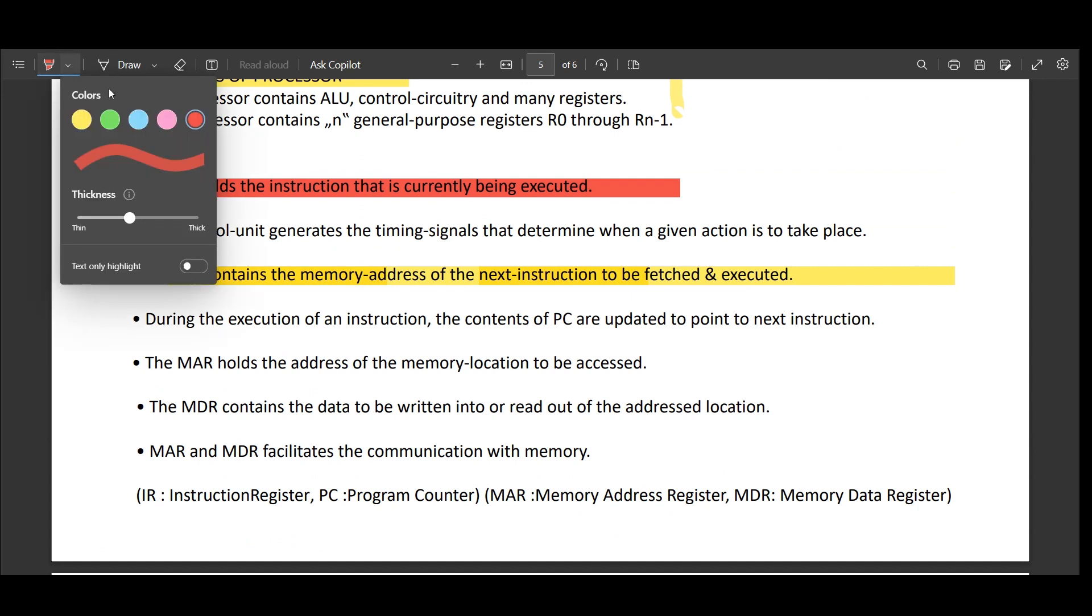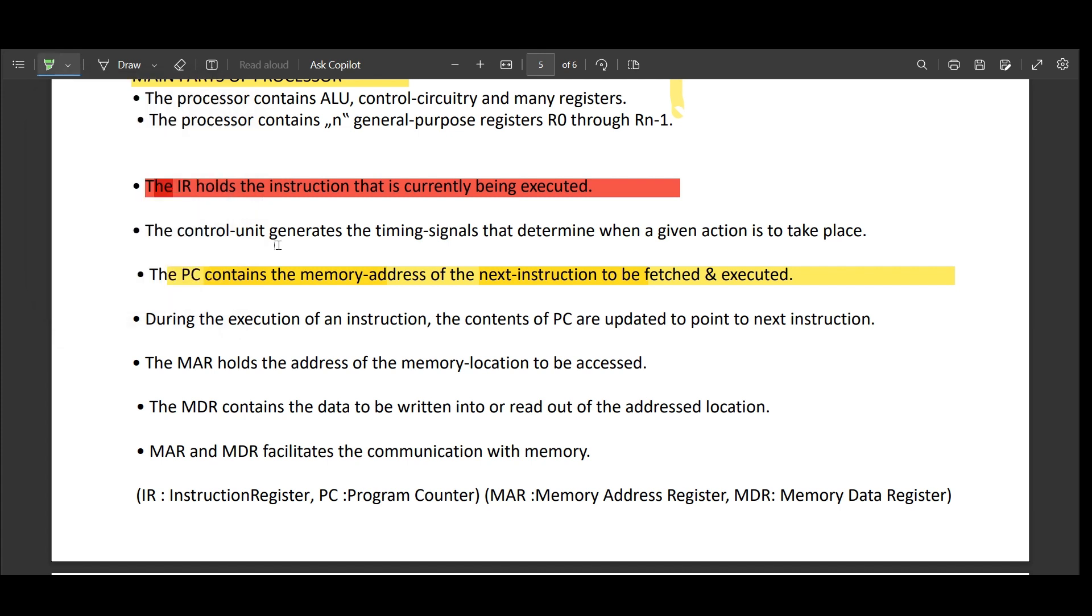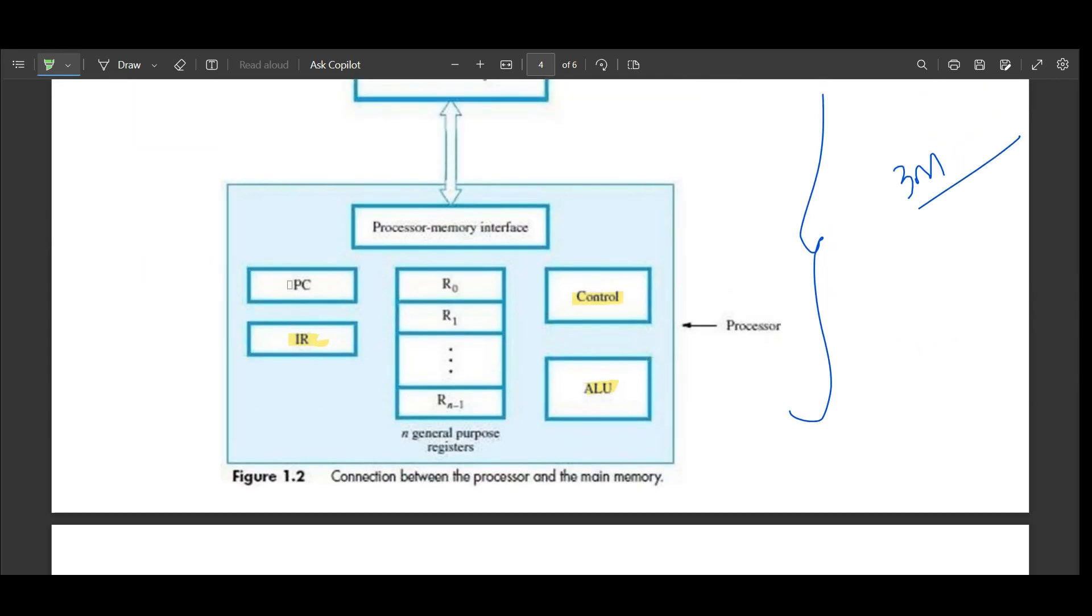Next is control unit. What does this control unit do? It generates the timing signal that determines when a given action is to take place. So we saw what does the PC do. I will repeat once again. PC is a program counter that holds the memory address. Remember, PC equals address. It holds the memory address of next instruction to be fetched and executed.